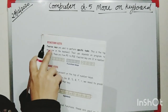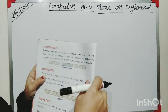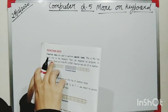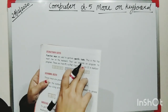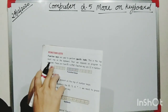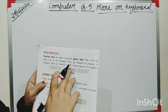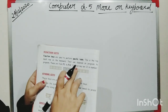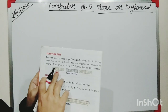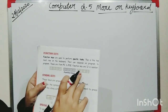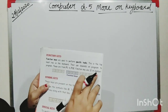Function keys are used to perform specific tasks. This is the top most row on the keyboard. Their use depends on the program. These are from F1 to F12 — function keys are 12 in number: 1, 2, 3, 4, 5, 6, 7, 8, 9, 10, 11, 12.